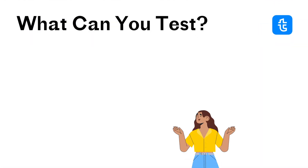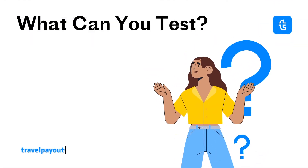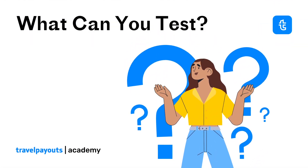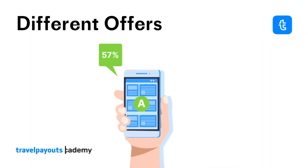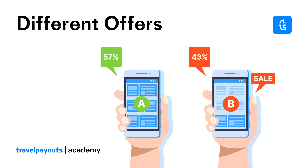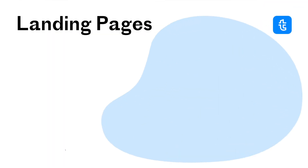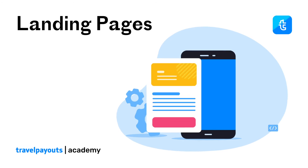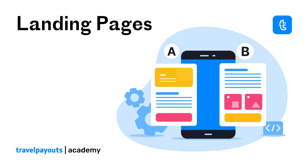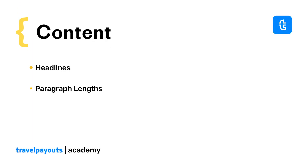Which elements can you A-B test for better affiliate results? Let's take a look at some examples. You can test different offers from the same brand or offers from different brands to see what your audience best responds to. Also, you can send traffic to two landing pages leading to the same offer and see which one will drive better results. Another option is to run experiments with different content elements, such as headlines, paragraph lengths, fonts, colors, visuals, and so on.